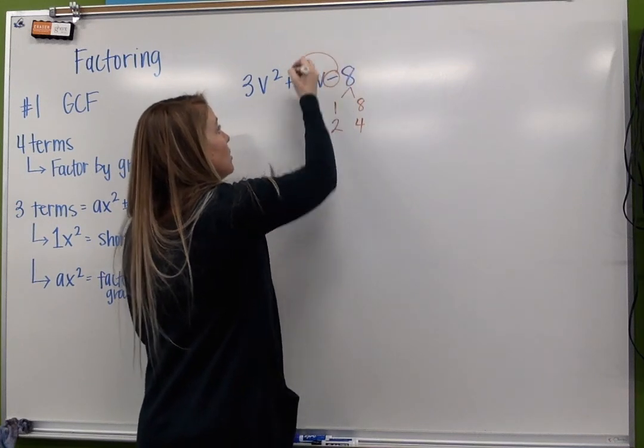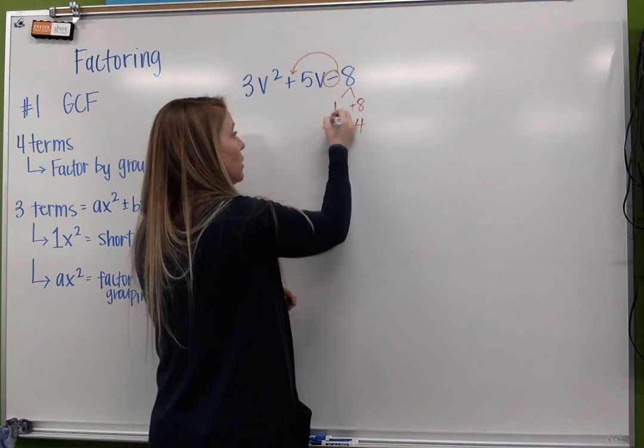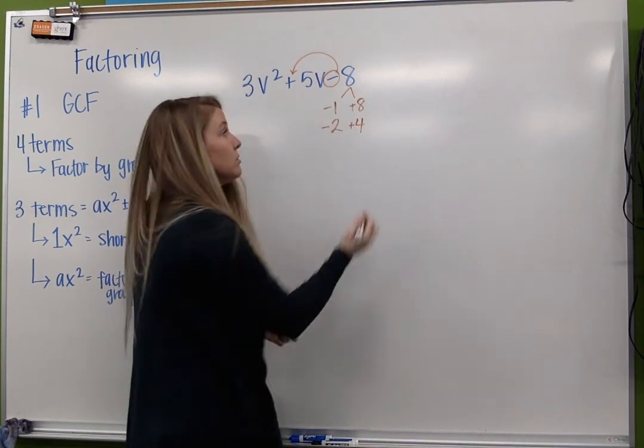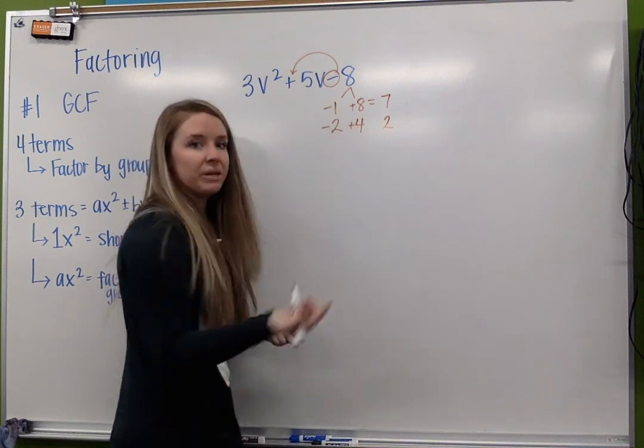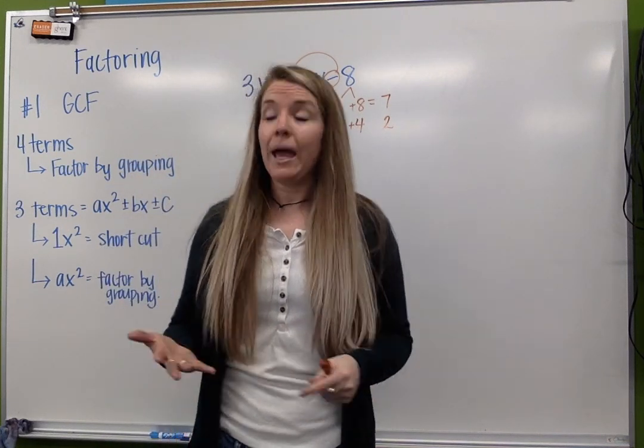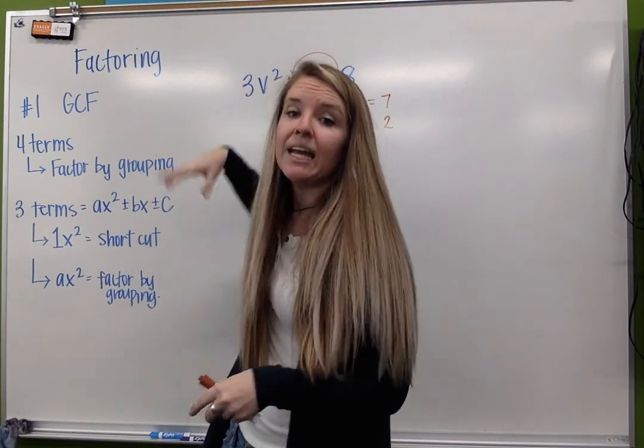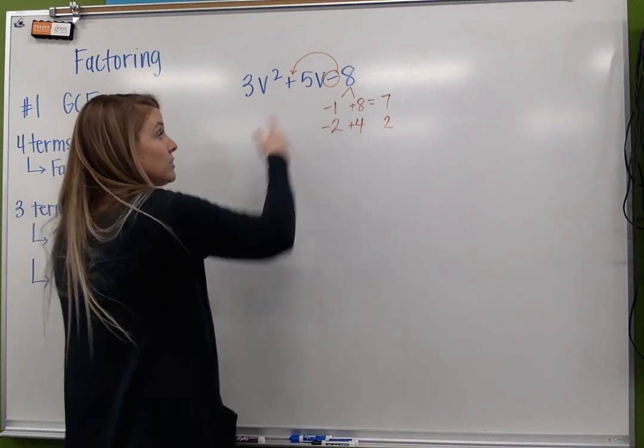Signs are opposite. Larger is positive. So that would be a positive 8, positive 4, negative 1, negative 2. That's going to give me a 7 or 2, but not 5. So what do I do? Because of this 3, it's going to change things up just a little bit. So instead of factoring my 8,